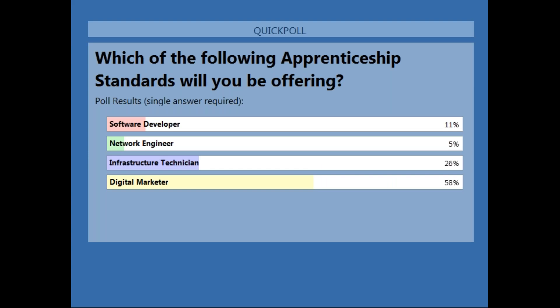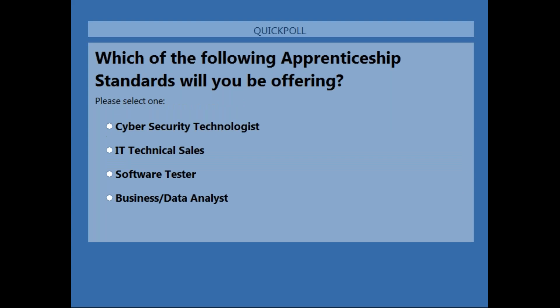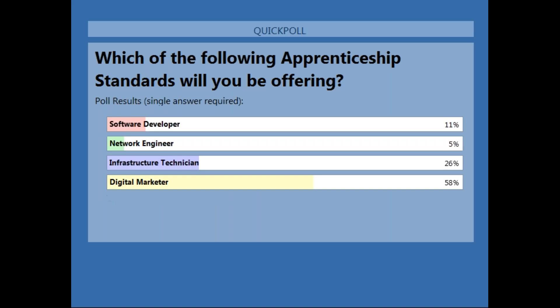With those results, it looks like the majority of you are delivering Digital Marketer. Now for the second part — the same question: which of the following apprenticeship standards will you be offering? The options here are Cyber Security Technologist, IT Technical Sales, Software Tester, and Business/Data Analyst. And with this result, it looks like about half of you are Business Data Analyst.